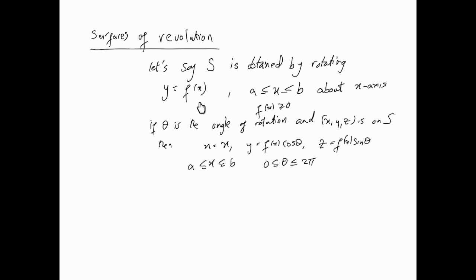In other words, you're looking at the vector function where x and θ are your parameters, so you have r(x,θ) = (x, f(x)cos(θ), f(x)sin(θ)). This is a surface generated by rotating the curve y = f(x) about the x-axis.